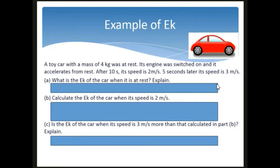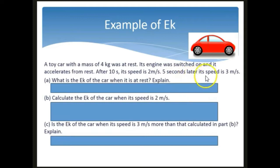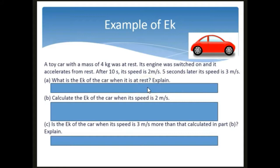In a typical problem: a toy car with a mass of 4 kilograms was originally at rest. When the engine is switched on it accelerates; after 10 seconds the speed is 2 meters per second; 5 seconds later the speed is 3 meters per second. When the car is at rest, the kinetic energy is 0 joules, because kinetic energy is the energy of a moving object and at rest it has no speed.